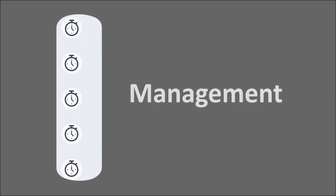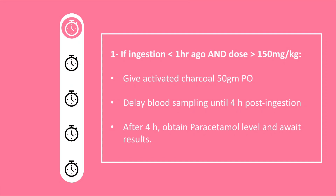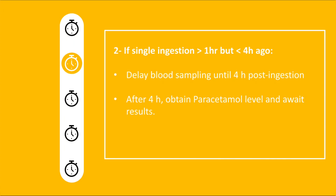Management depends on timing of ingestion. If the patient arrives within less than one hour, give activated charcoal 50g orally (1g/kg in children), then delay blood sampling until four hours post-ingestion. After four hours, obtain paracetamol level and await results. If the patient arrives after one hour but less than four hours, take a blood sample and delay until four hours for the paracetamol level.